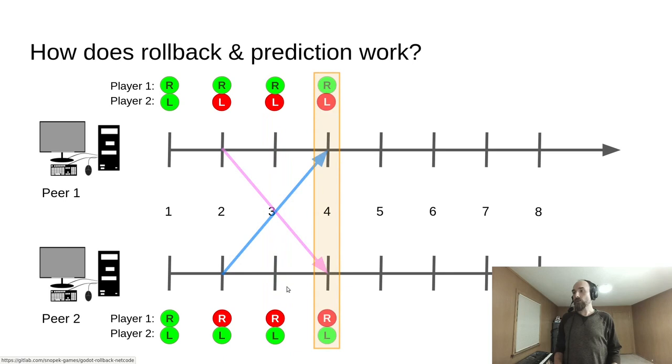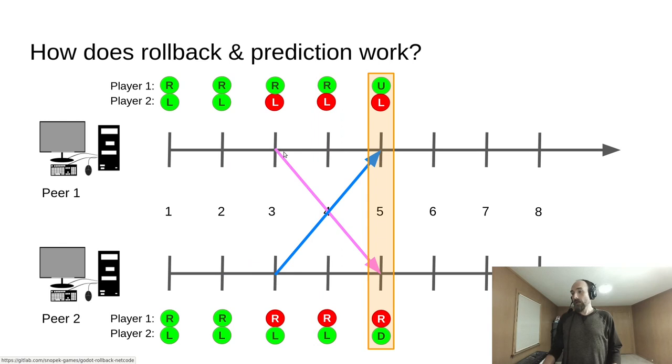On frame number 4, player 1 is still pressing right, player 2 is still pressing left, and we finally received the real input from tick number 2. However, the real input matches the prediction that we made, so we don't need to roll back. We simply mark that input as real in our input buffer and move on.